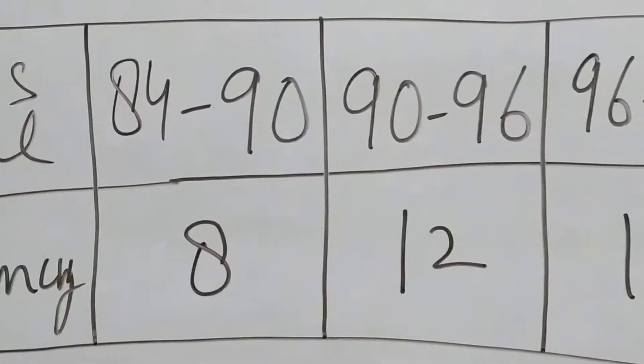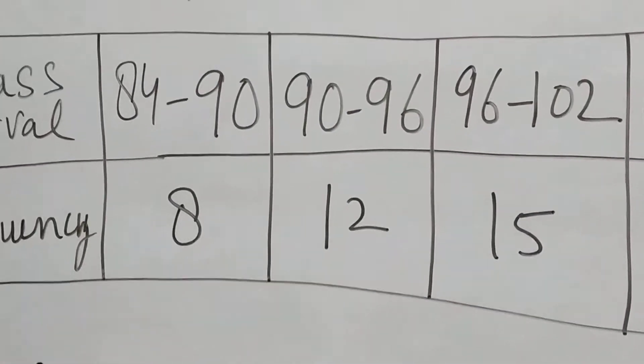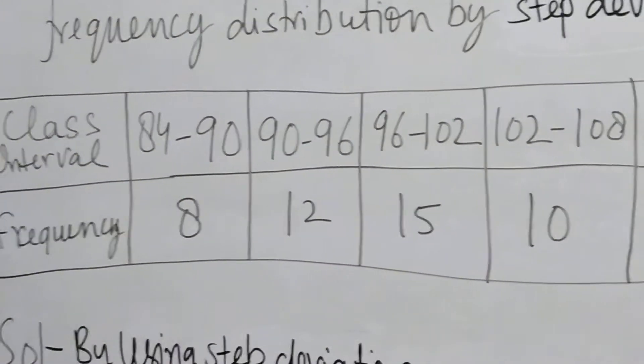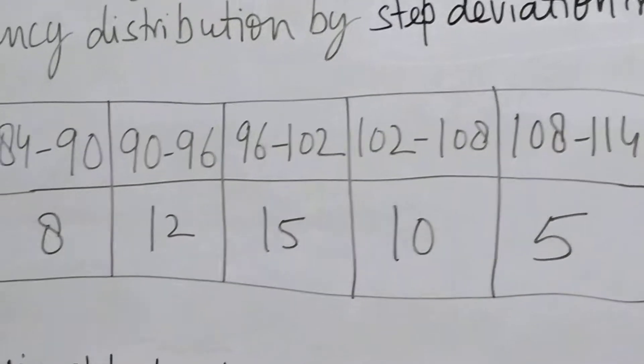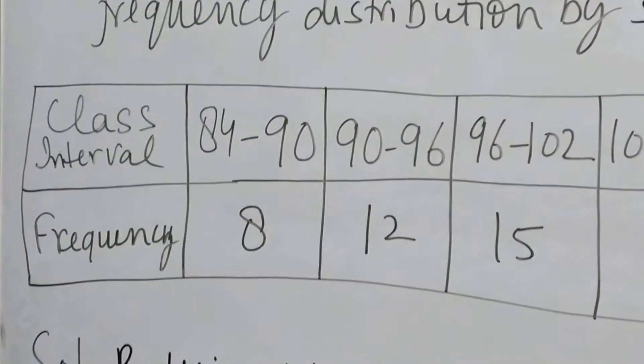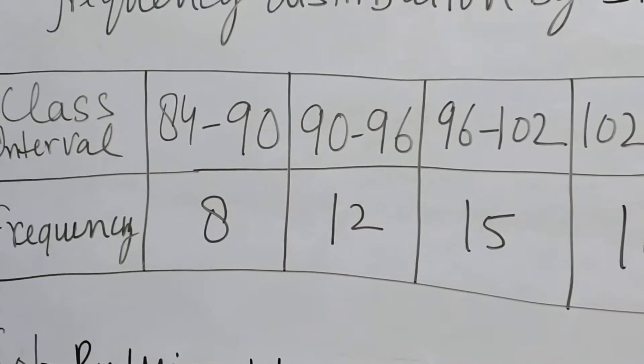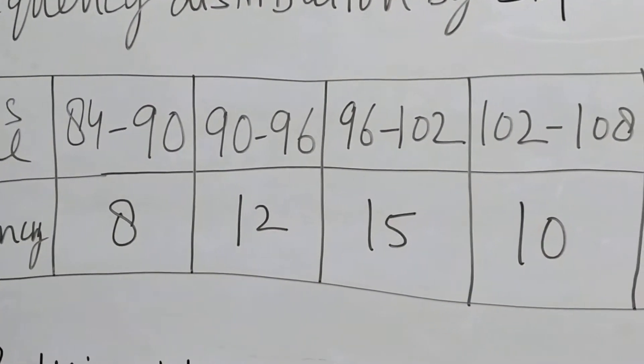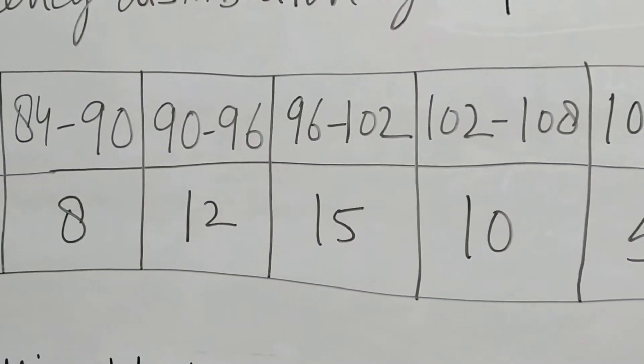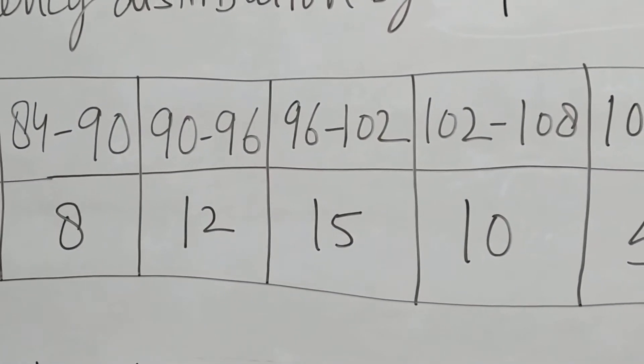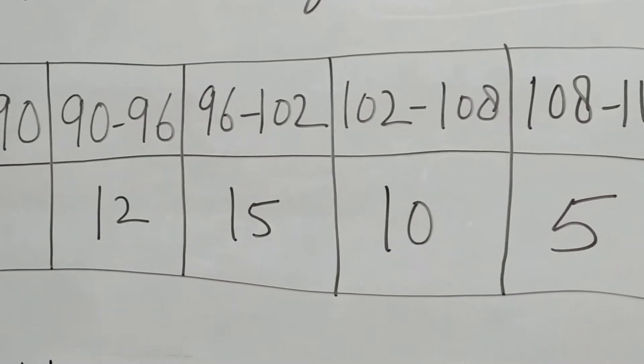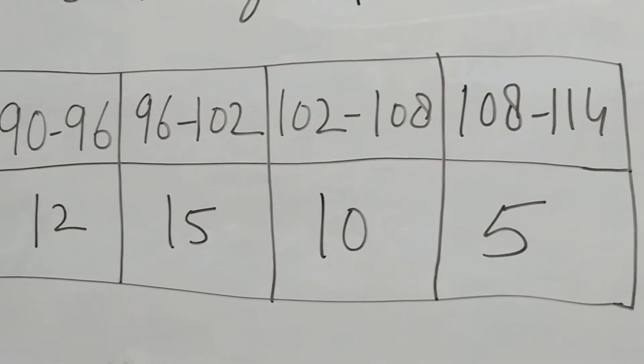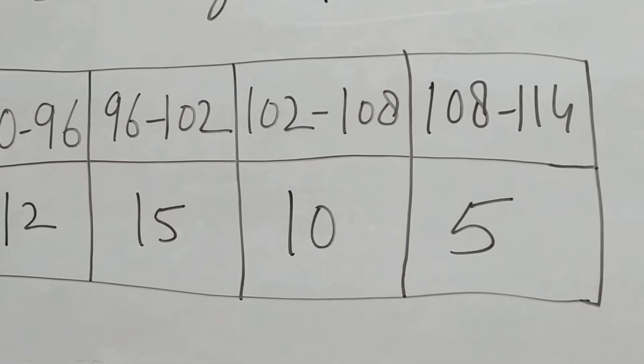If the same observations are there, the table given in the question is the same. Just see it again. Close interval and frequency. You can look at it again because this is a separate question.